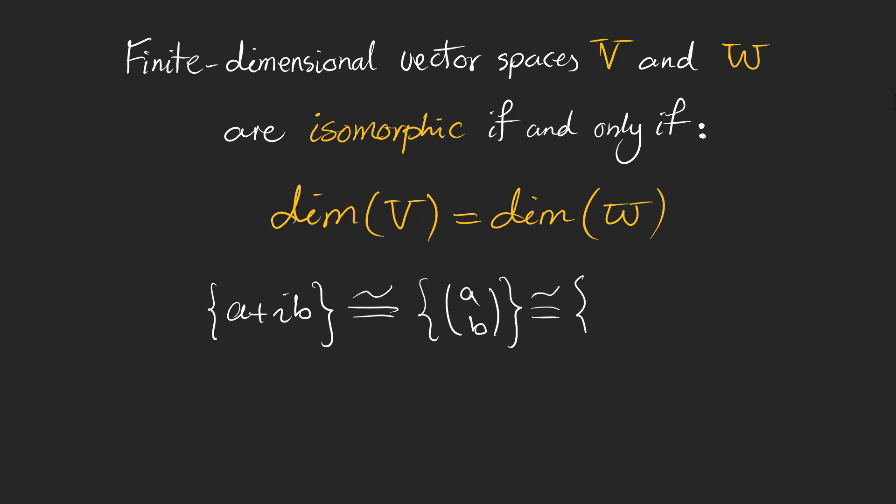For example, complex numbers can form a vector space and we can write any complex number using a real part and also an imaginary part, so its dimension is two. Complex numbers are isomorphic to 2D vectors shown by two by one column matrices and also polynomials of degree one or less meaning that a and b in the polynomial can be any real number including zero. We can also show these vector spaces using these four symbols.